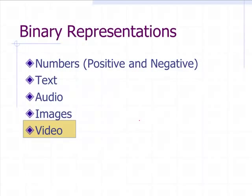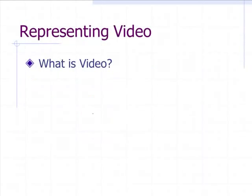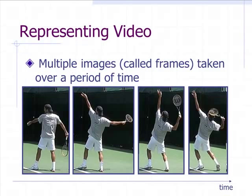All right, last, let's talk about video. Now video is kind of special. Remember I told you video is a combination of audio and images put together. So what is video? It's really multiple frames, multiple images called frames taken over a period of time. So if we look at this as time, this is a person playing tennis, and these pictures were taken over a time frame.